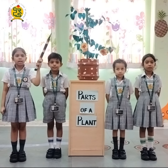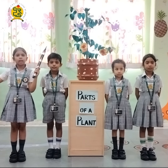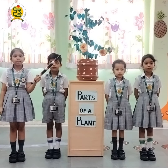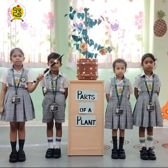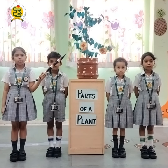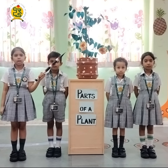They need air, water, and sunlight to live. The first part of the plant is the roots. Roots are a part of the plant. They grow in the ground.